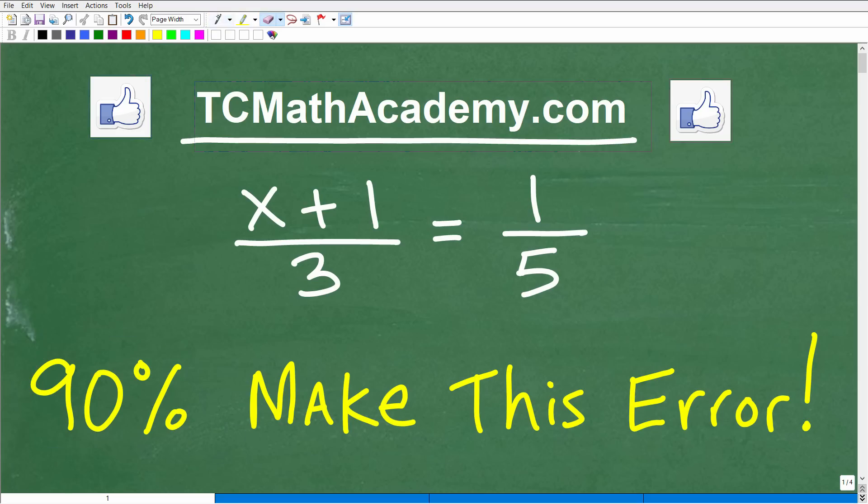I'm going to talk about this mistake using this example problem. So here we have an equation: x plus 1 over 3 equals 1 fifth. If you can solve for x, that would be great. Go ahead and put your answer into the comment section.